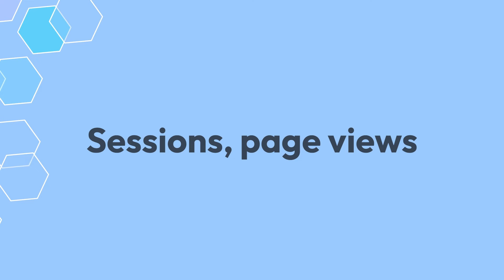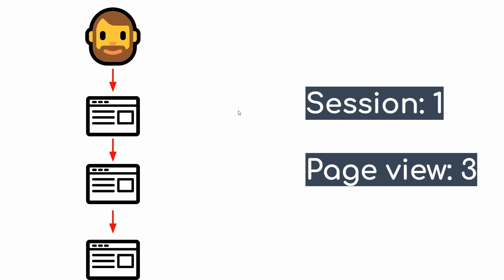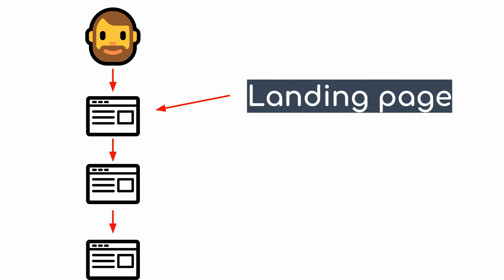Page views are also related to sessions. Let's say you come to a website and go to three different pages — you'll be counted as one session and you have three page views. On top of that, you have a metric called a landing page. The page that you visited first becomes your landing page. So for example, if you go to a website and visit the home page first, that's your landing page.